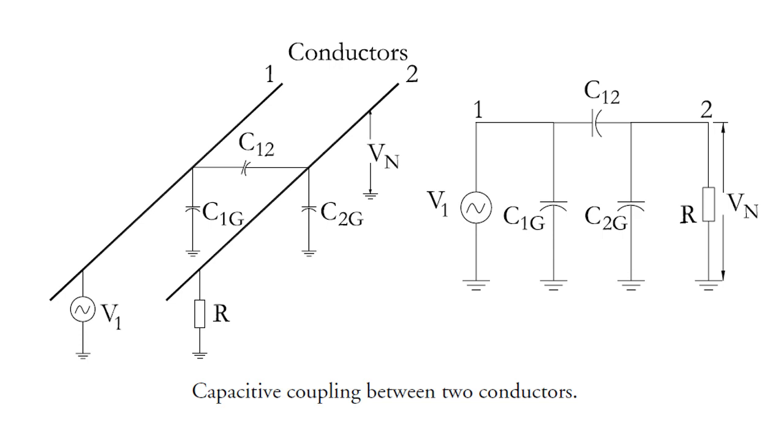Capacitive coupling, also known as electric coupling, is a result from the interaction of electric fields between circuits. If two conductors are placed close to each other, there will be a stray capacitance between them.